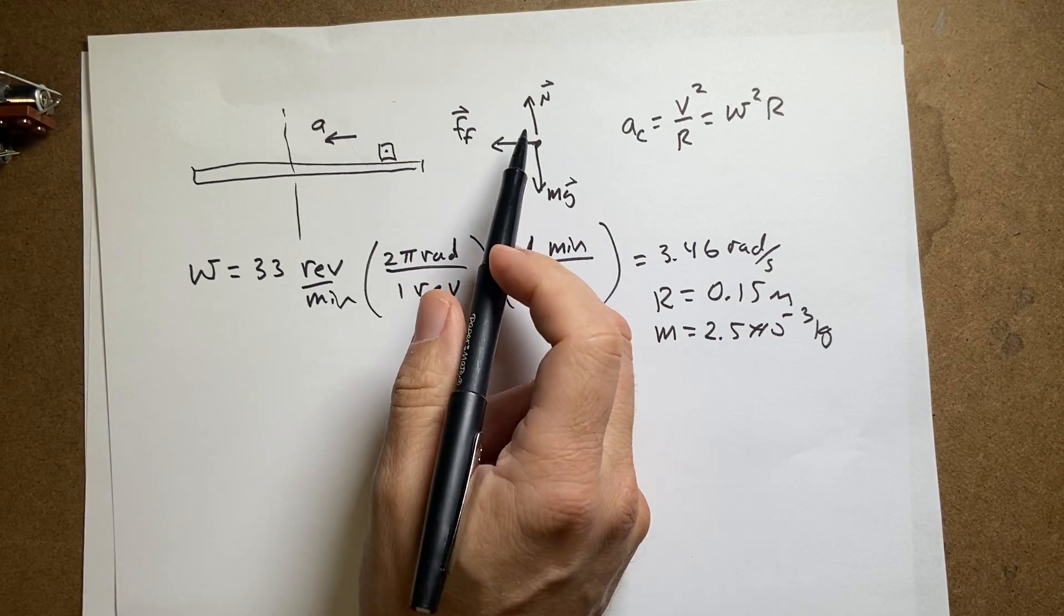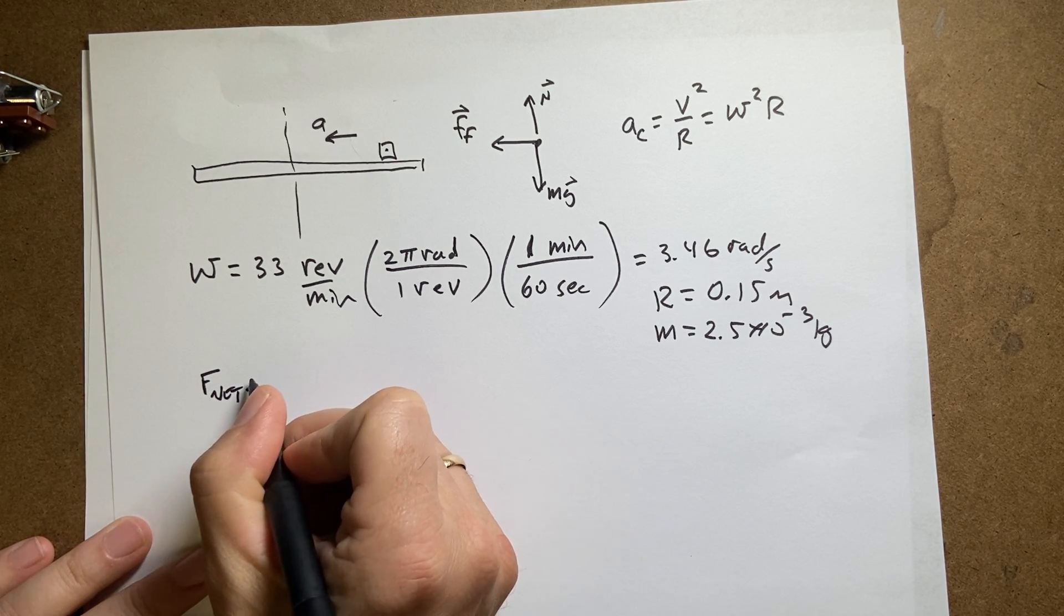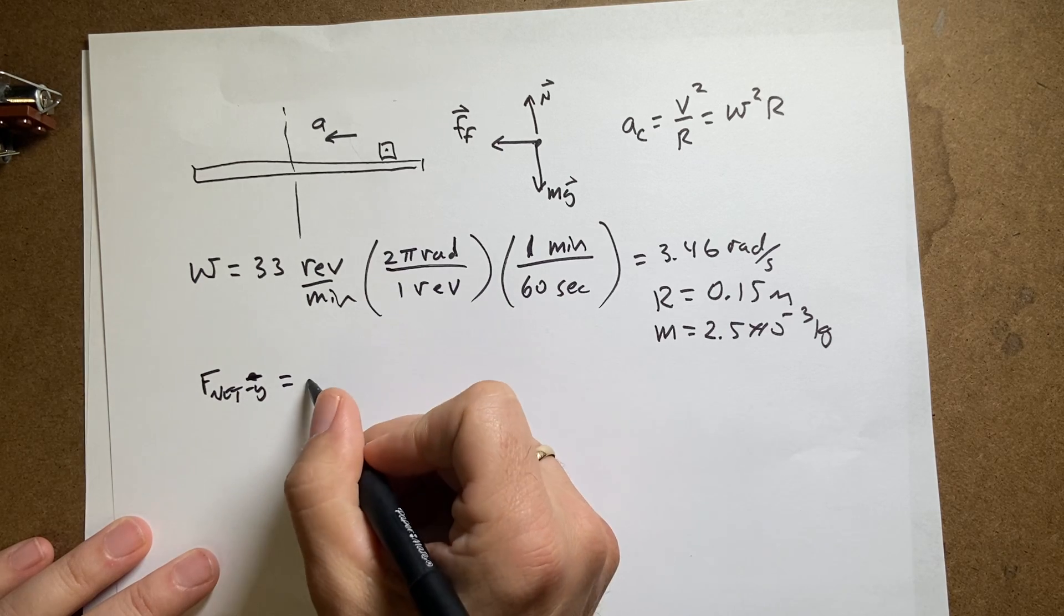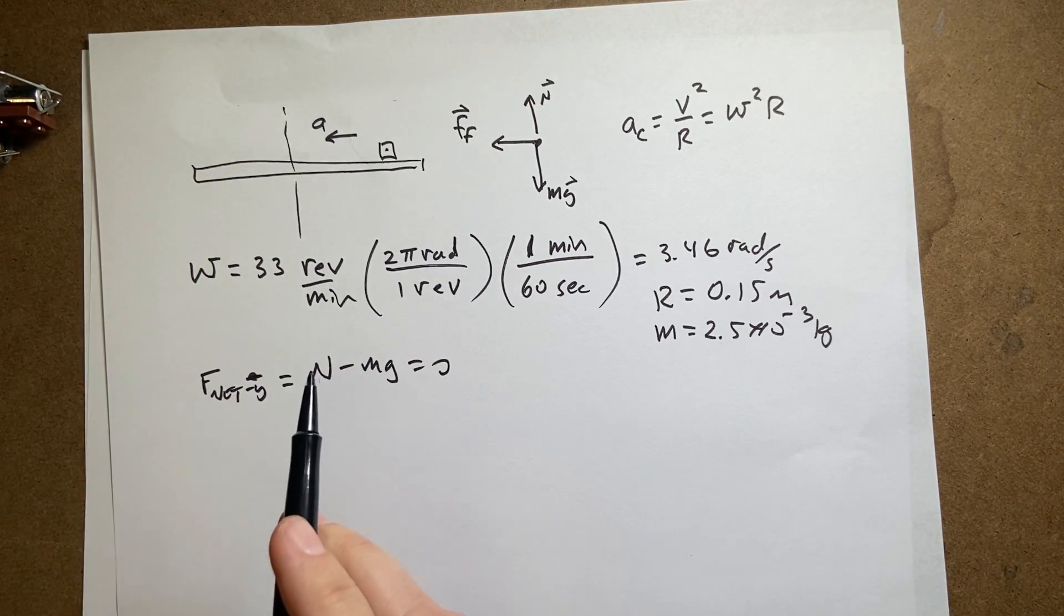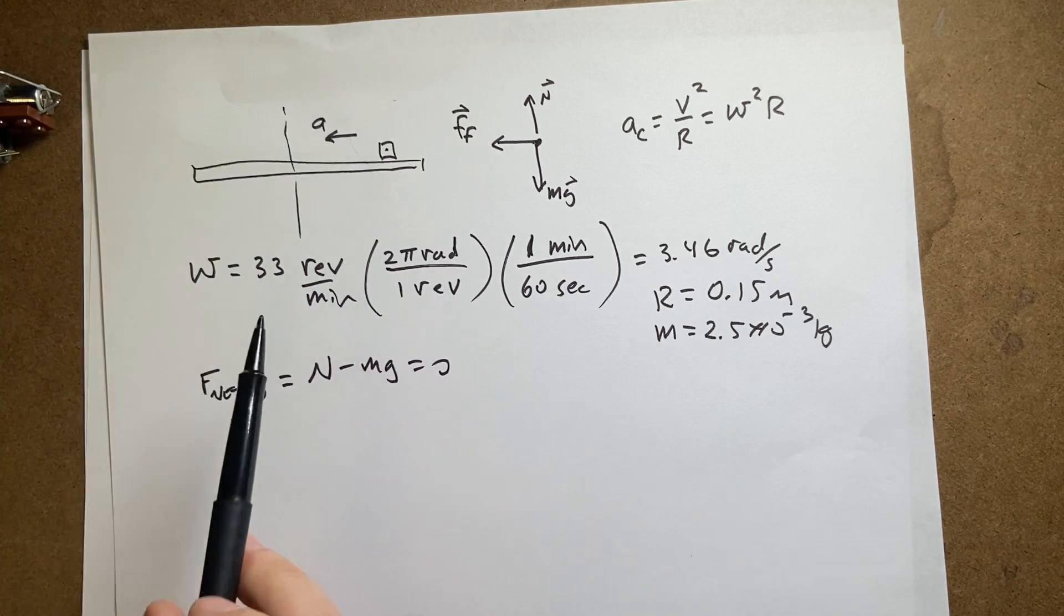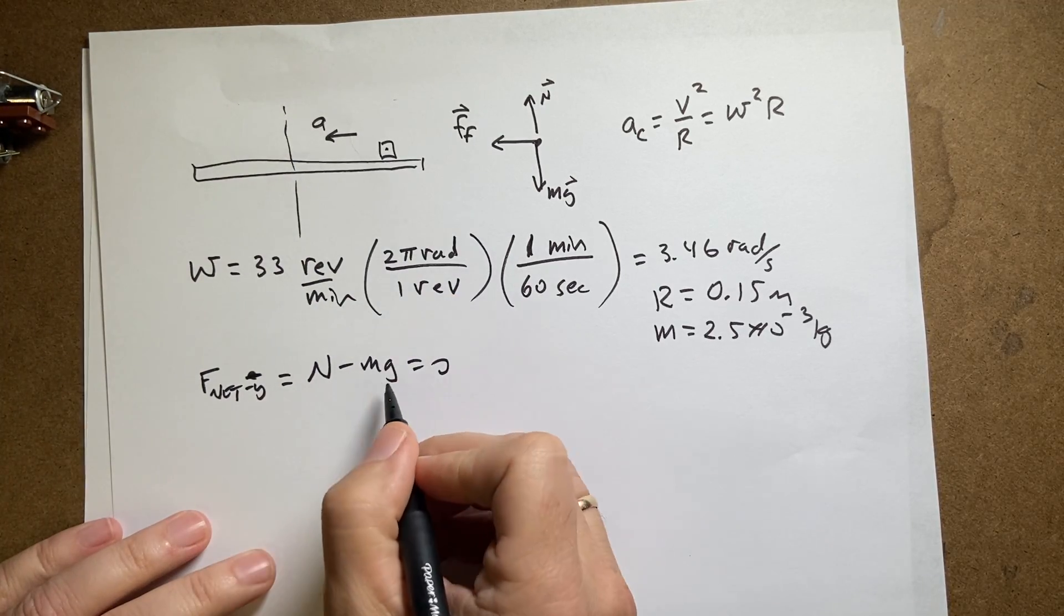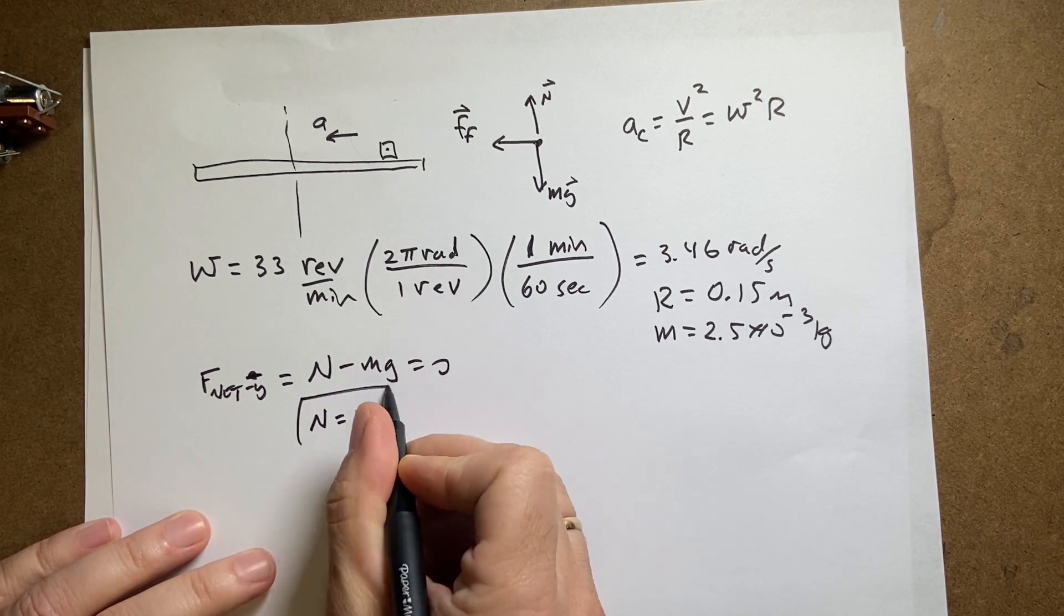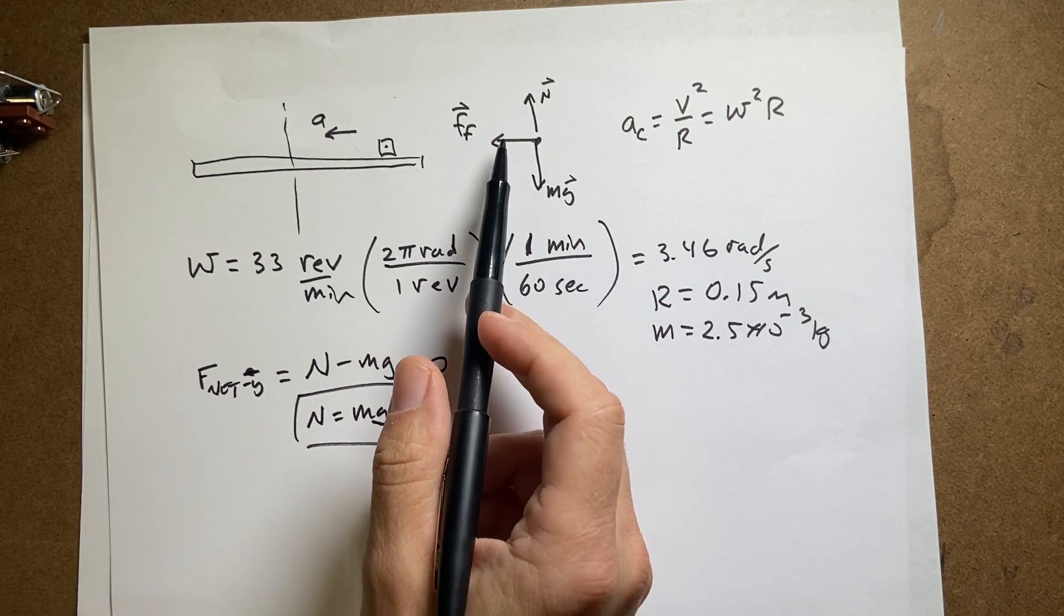Let's look at the vertical direction. F net y is equal to n minus mg equals zero because the object is not accelerating in the vertical direction. So the net force in the vertical direction has to be equal to zero. So I can solve that for n, n equals mg. Be very careful. A lot of people always put n is equal to mg and it's not always true. It happened to be true in this case.